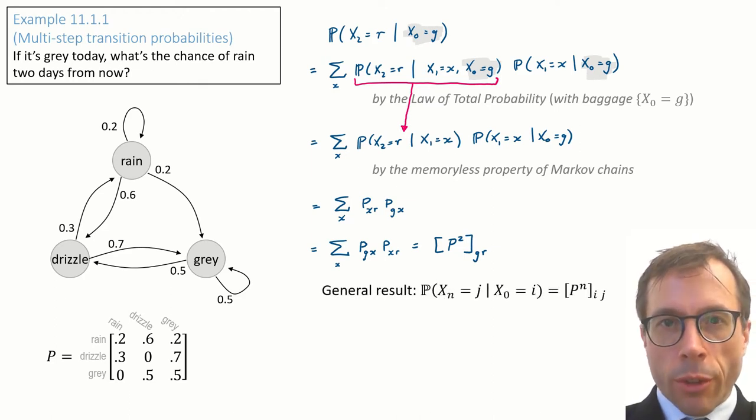In fact, there's a general result here. The probability of going from state i to state j in n steps is given by the relevant entry of the transition matrix raised to the power n.